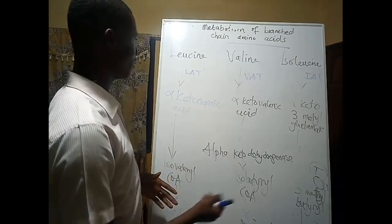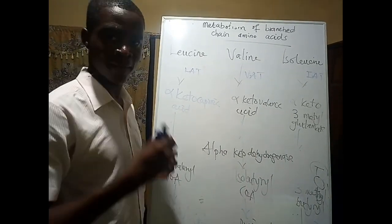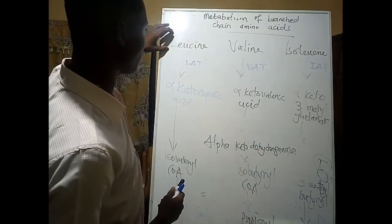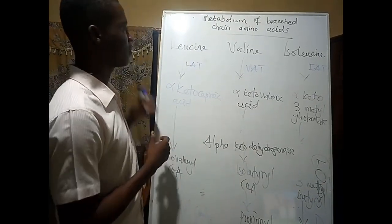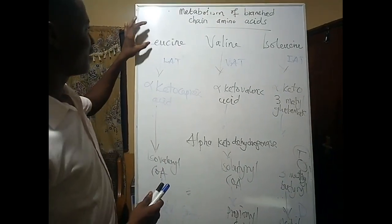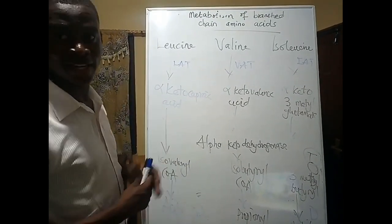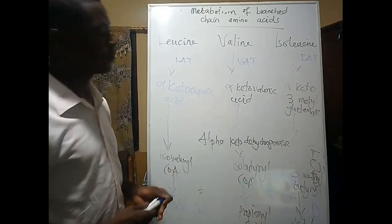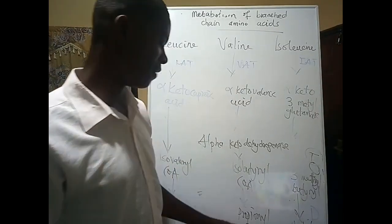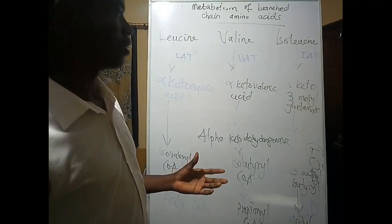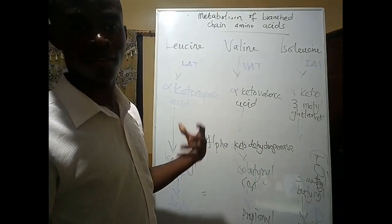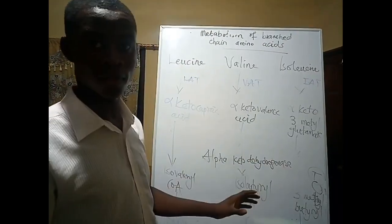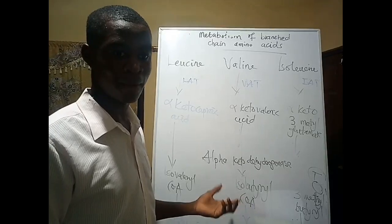Glucogenic amino acids are amino acids that can be metabolized to give us glucose, while ketogenic ones are metabolized to give ketone bodies. Leucine is a ketogenic amino acid — it can be metabolized to give ketone bodies. Valine is a glucogenic amino acid — its final products can be metabolized to give us glucose. Isoleucine is both ketogenic and glucogenic.